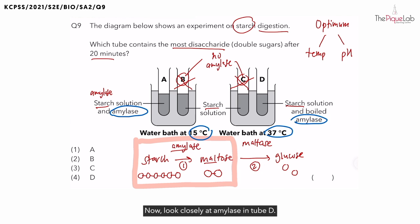Does everybody agree? Now look closely at amylase in tube D. It has been boiled. What does that mean? Now if the amylase has been boiled, it means that it has been denatured. I'm going to write that down. So if the enzymes are denatured, can they still work? They cannot work.